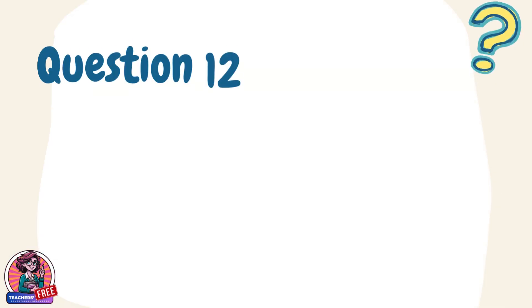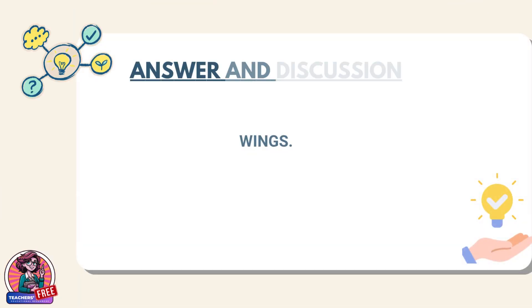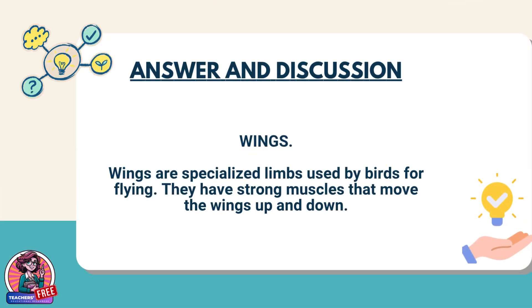Question 12. What body parts help birds to fly? Answer: Wings. Wings are specialized limbs used by birds for flying. They have strong muscles that move the wings up and down.